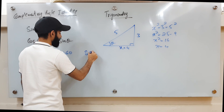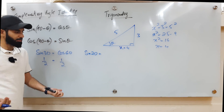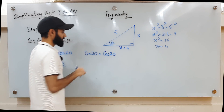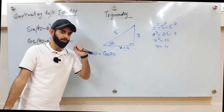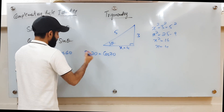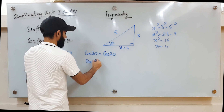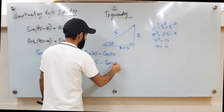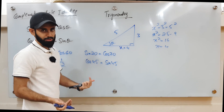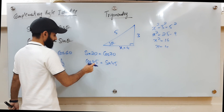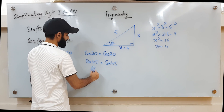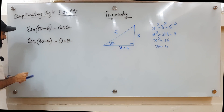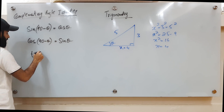You'll notice that sine 20 equals cos 70 — whatever sine 20 turns out to be, cos 70 is exactly the same. Another value: cos 45 equals sine 45, because 45° and 45° are complementary angles. Both equal √2/2. The third complementary angle identity involves tan: tan(90° − θ) = 1/tan θ.